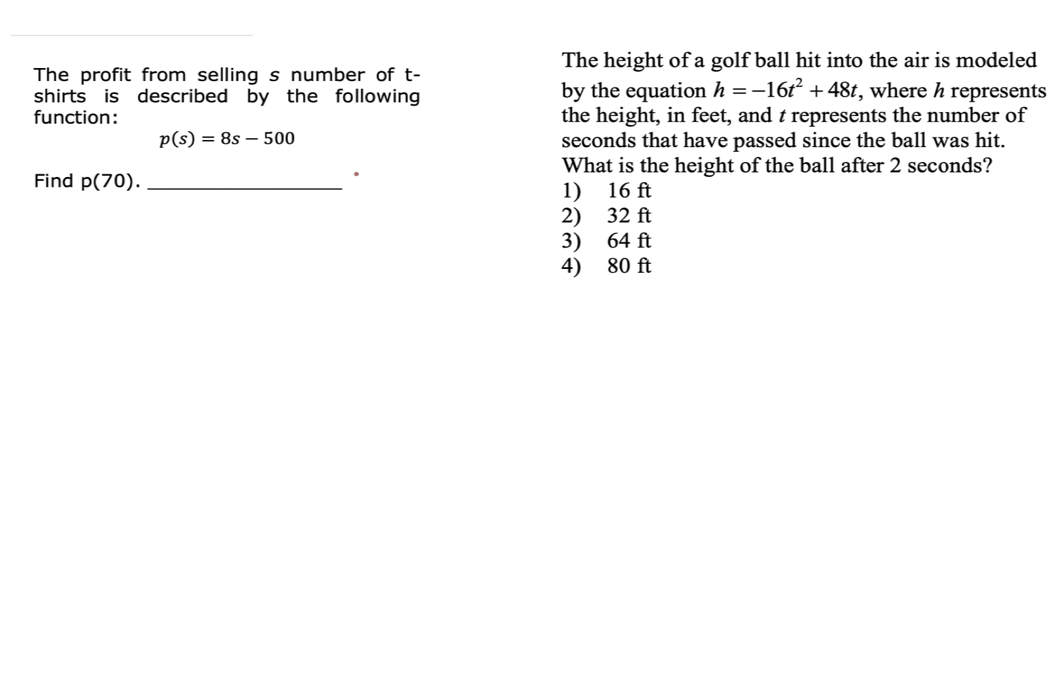Now, sometimes your function comes in the form of a word problem because we all know the TAKS folks love word problems. This is a simple one. The profit from selling S number of t-shirts is described by the following function. So your function is P of S equals 8S minus 500. And the question was simple. We just need to find P of 70. So wherever I see S, I'm going to replace it by 70. Apply PEMDAS. I'm going to multiply first. 8 times 70 is 560. And I'm subtracting 500. And that's an easy subtraction. 560 minus 500. My answer is 60.